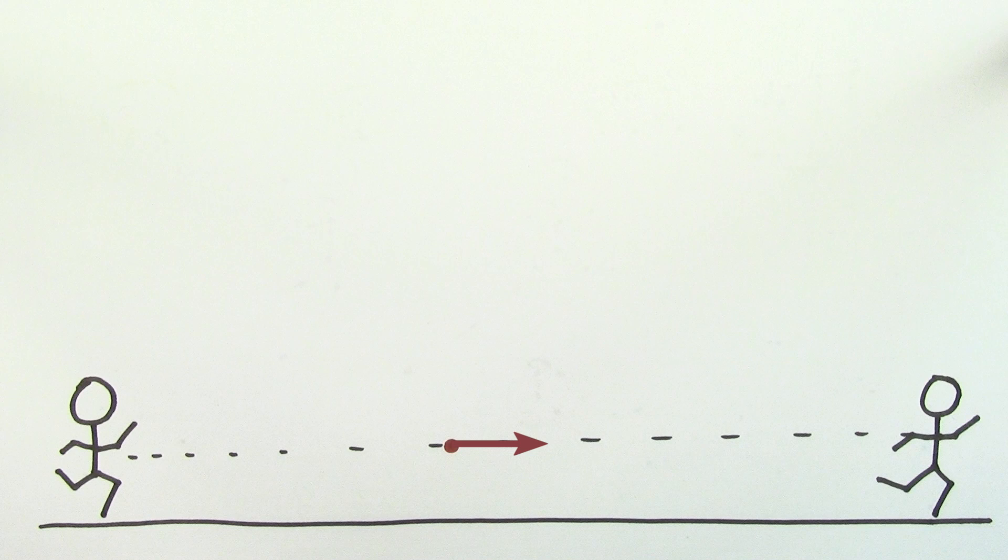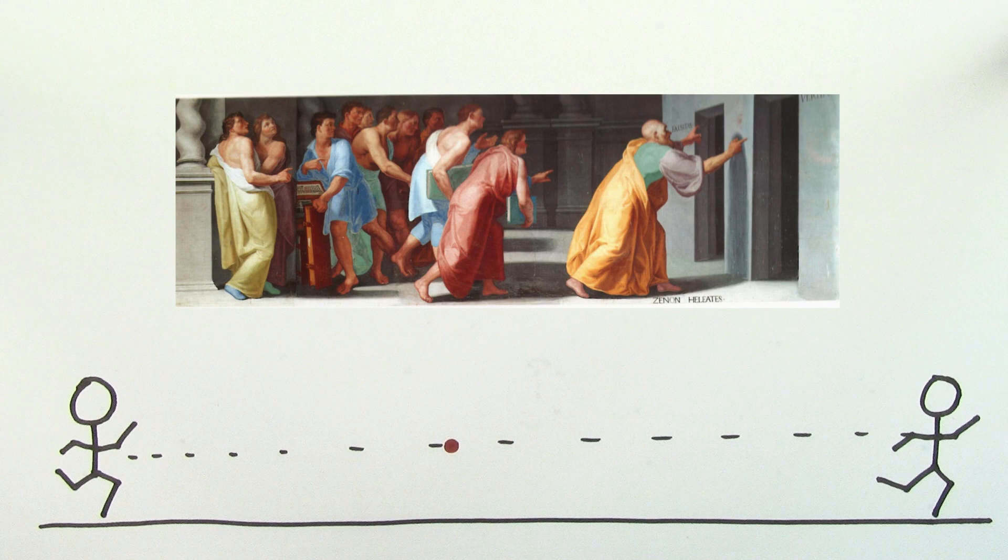In fact, since defining motion at a particular point in time seemed impossible, it made some ancient Greeks question whether motion had any meaning at all. They wondered whether motion was just an illusion.